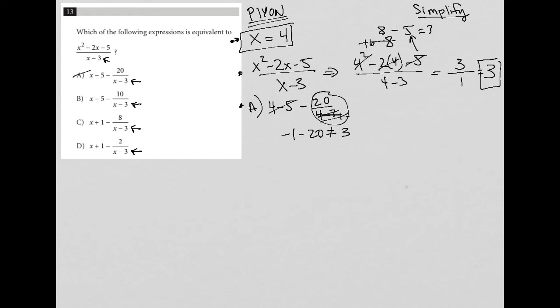That's how fast we can get through this. Answer choice B, do the same thing. 4 minus 5 minus 10 over, again, 4 minus 3, which is 1. So I'm going to just call this minus 10 to save some space instead of calling it 10 over 1. So 4 minus 5 is negative 1. Negative 1 minus 10 equals negative 11. So B is also not the correct answer because negative 11 does not equal positive 3.